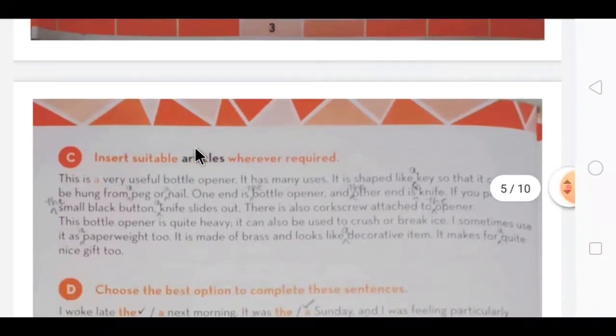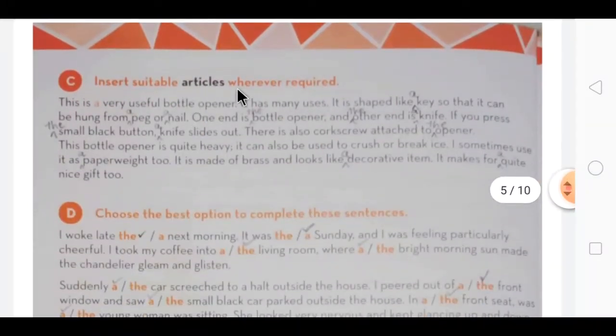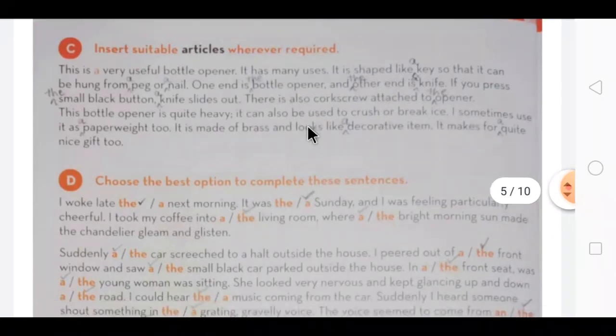How I have explained you, zero articles - where we don't put articles, there you will put a cross. According to the points I explained, and where a and the are needed, you have to put a and the in this exercise also.